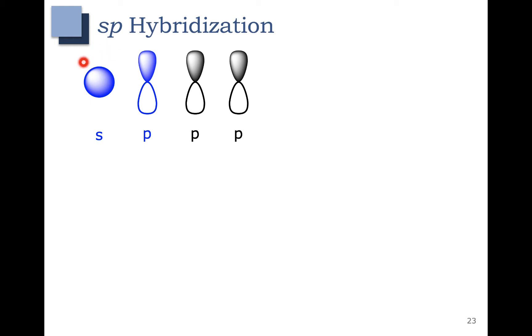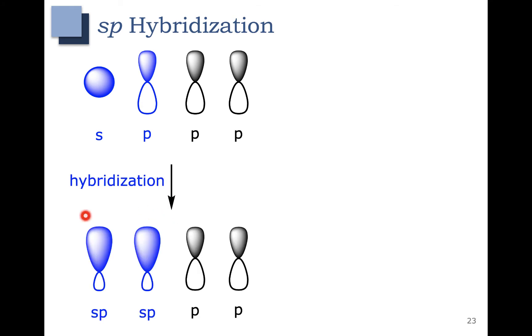That means that only this s orbital here and this p orbital here combine and mix. That gives us two sp hybrid orbitals. Each of those are about half s and half p, and two unused p orbitals.